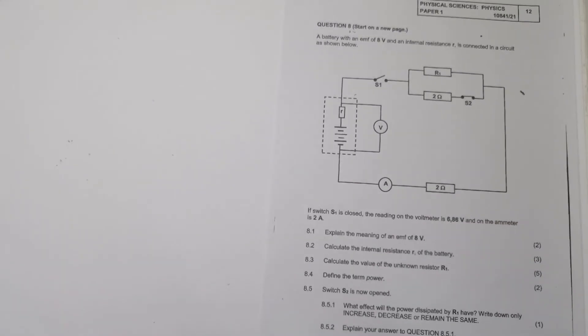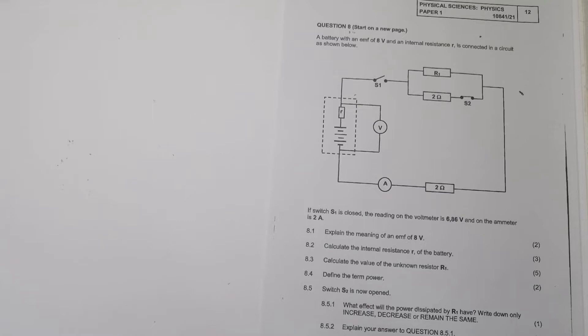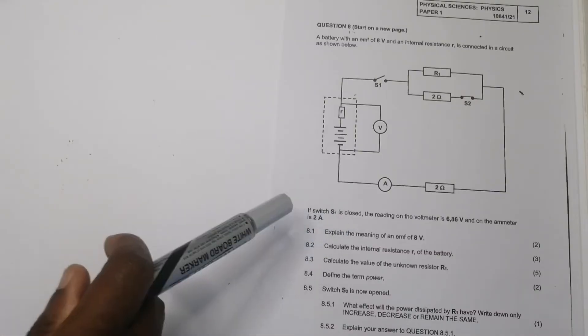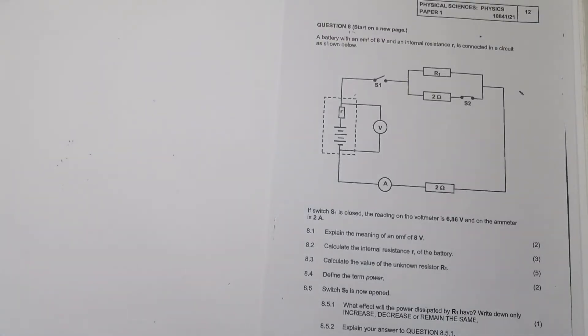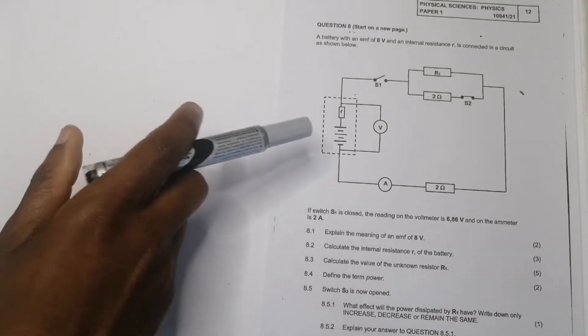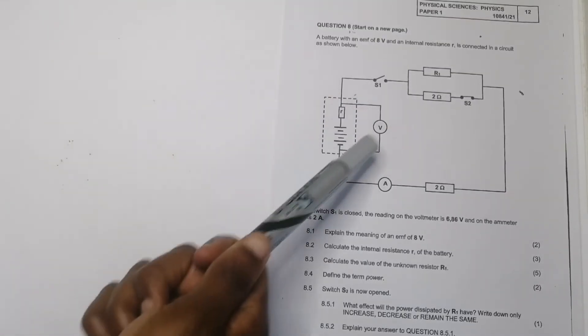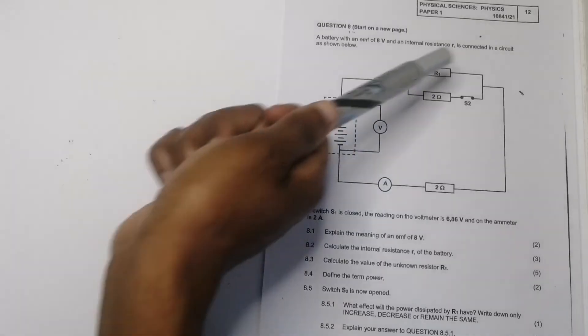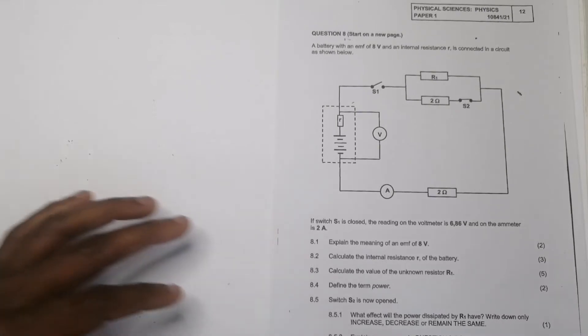We're looking at Ohm's Law, electric circuits. We've got a battery with an EMF of eight volts and an internal resistance of R. So we don't know the internal resistance. If switch one is closed, there's current in an external circuit. The voltage is 6.86 volts.